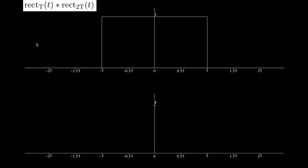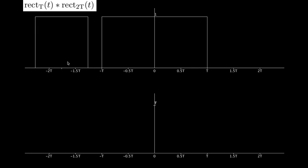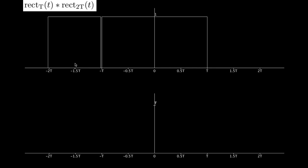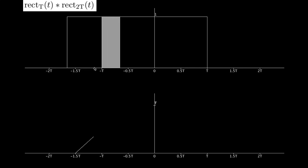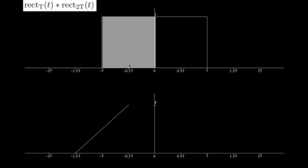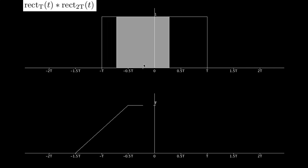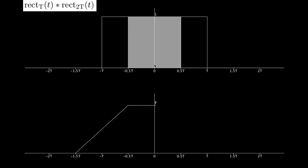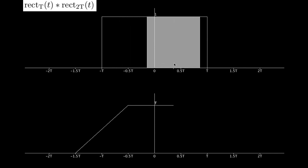We're going to be sliding a rect of width t, and again we're looking for the overlap. They start to overlap at negative 1.5t, and on the graph at the bottom the overlap is increasing. This time it reaches its maximum at negative 0.5t — the overlap cannot be bigger than the smallest rectangle — and then the overlap is constant, so we see a horizontal line on the bottom graph all the way until 0.5t.